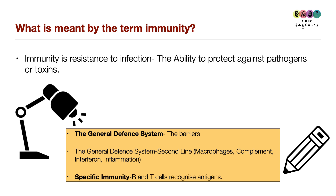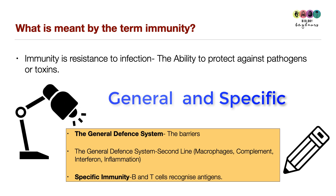What is meant by the term immunity? Immunity is resistance to infection — the ability to protect against pathogens or toxins. When we talk about developing immunity, we are discussing the human defence system, which is made up of the general defence system and the specific defence system.